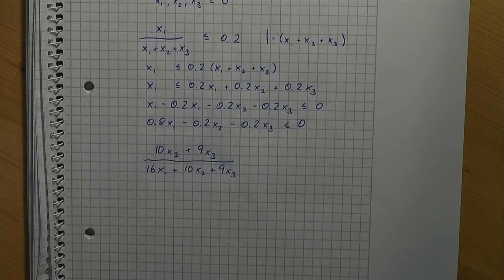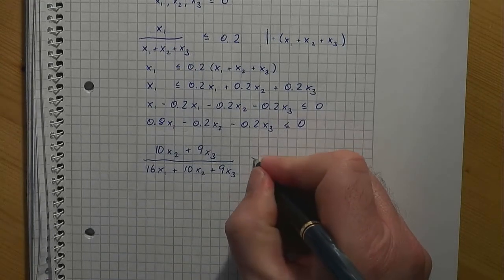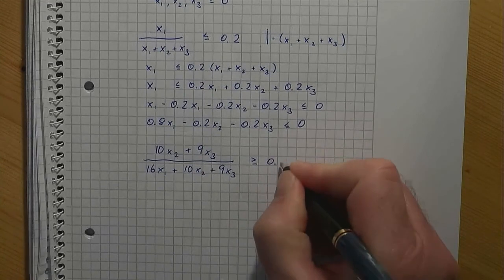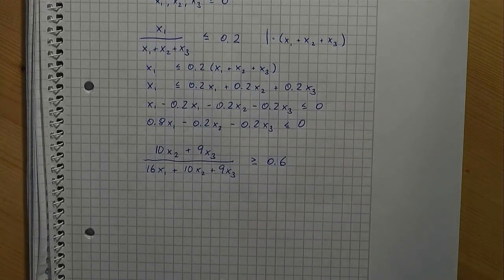That value should be at least 60%, which gives us the following. This constraint is non-linear, so we are not ready yet. Doing basically the same transformations as in the first example, we get our final result.